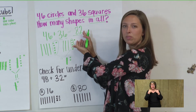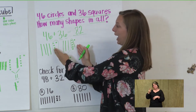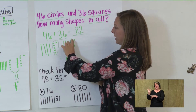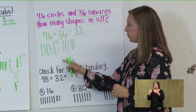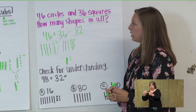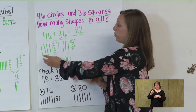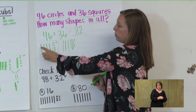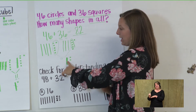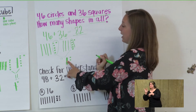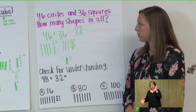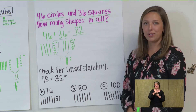Do you have 82 for your sum? Let's check. We added our ones: 1 through 12. We got 12 and converted that into a rod and two cubes. Then we counted our tens: 10, 20, 30, 40, 50, 60, 70, 80 — put an 8 in our tens spot to hold 80 — and then 1, 2 in the ones spot for the sum 82. 46 plus 36 equals 82.